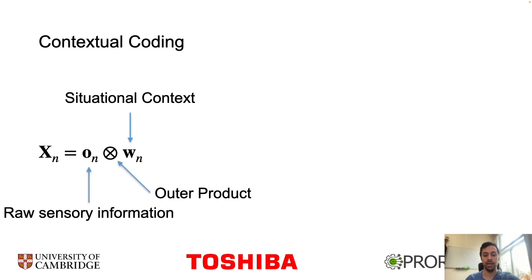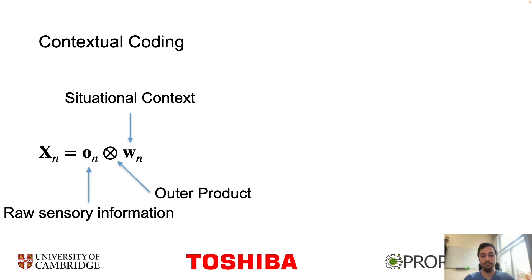Contextual coding, on the other hand, provides a means to discern between similar sensory information received in different contexts. For example, if I'm in a public space and hear voices, that's fine. But if I think I'm alone and start hearing voices, this would produce an entirely different experience, even if the raw sensory information is the same. Our model learns a context that encodes relative time.